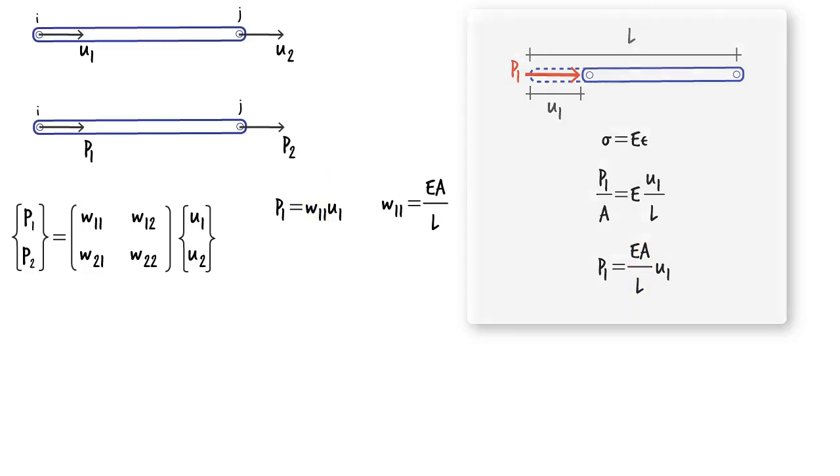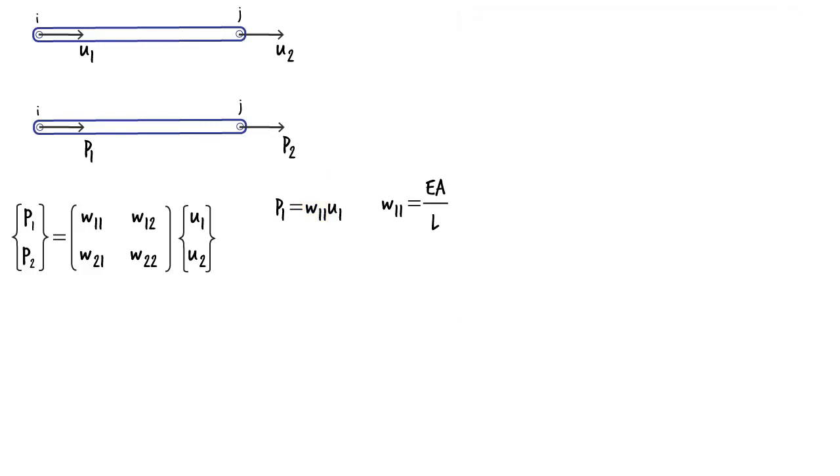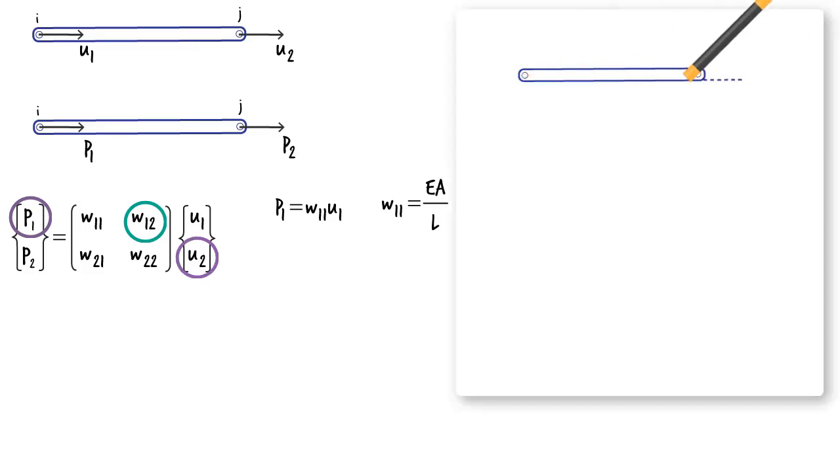The other coefficients of the stiffness matrix can be computed in a similar manner. Here is how we can determine W12. The coefficient is for pair P1-U2. That is, if we give the truss member an axial displacement of U2, then the force caused at the left end of the member, which we refer to as P1, is W12 times U2.